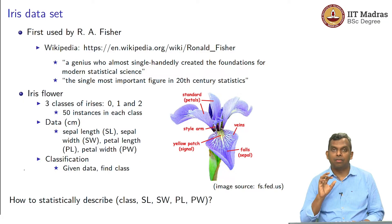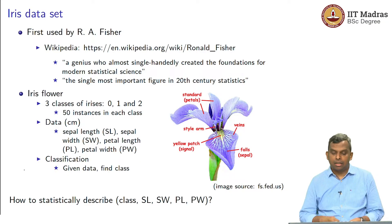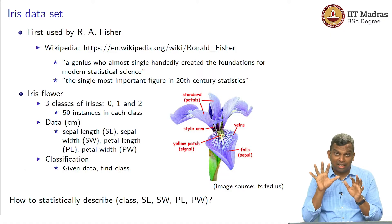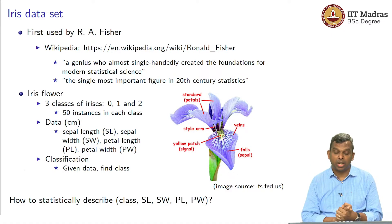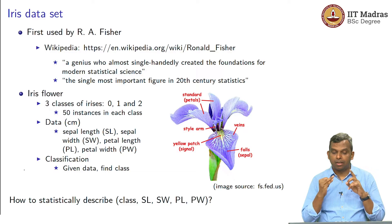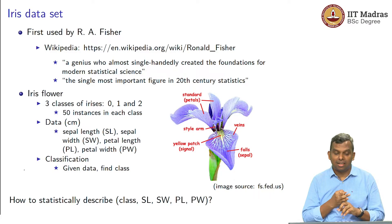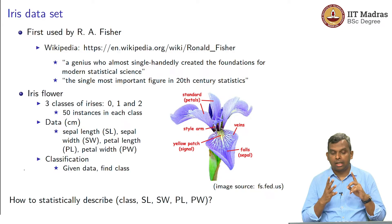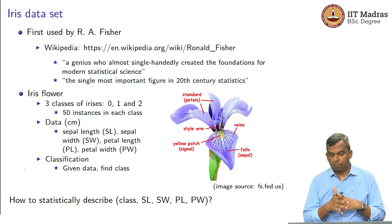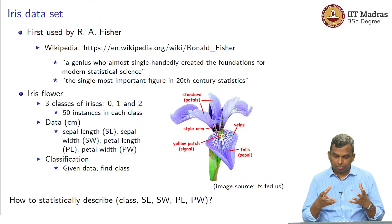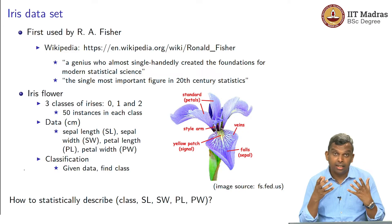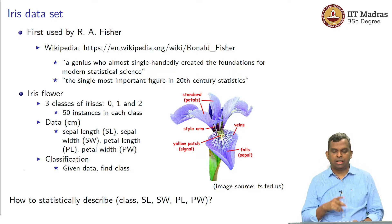In short, we will consider how to statistically describe this combination of five things. There are five things in this dataset: the class, SL (sepal length), SW (sepal width), PL (petal length), and PW (petal width). How do you statistically describe it? That is the question.